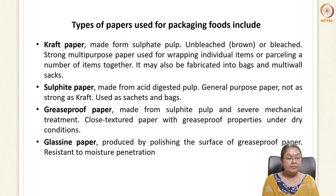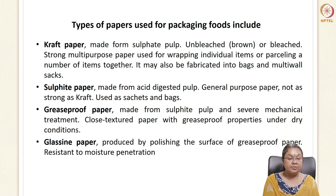Types of paper used in the food industry: Craft paper is made from sulfated pulp using chemical pulping. It can be unbleached (brown in color) or bleached (dull color), and is used for wrapping individual items, parceling, and can be fabricated into bags or multi-wall sacks. Sulfide paper is made from chemically acid-digested pulp — not as strong as craft paper, but a general-purpose paper used to develop sacks and bags. Grease proof paper is made from sulfide pulp subjected to very high mechanical treatment and is used under dry conditions as a close-textured paper.